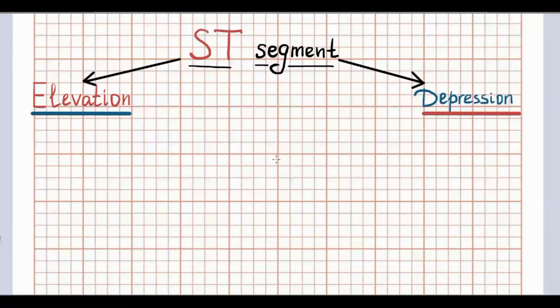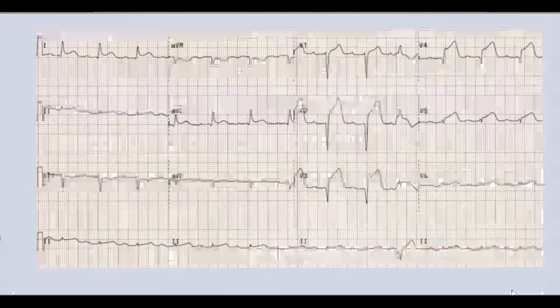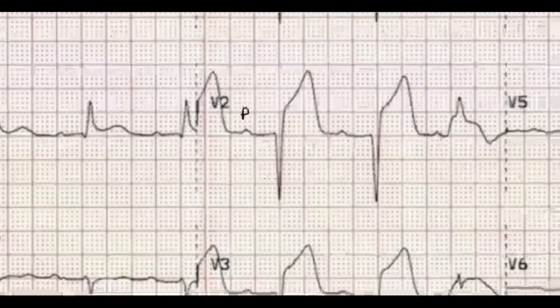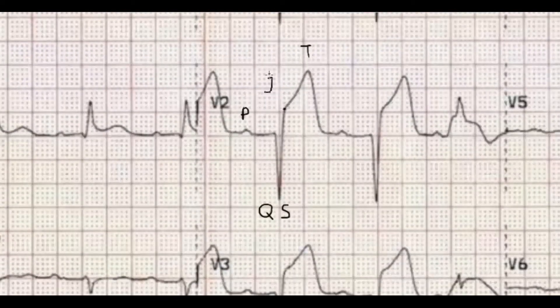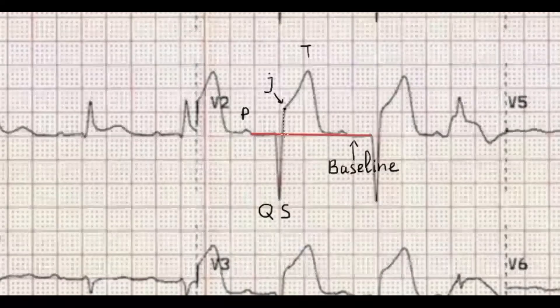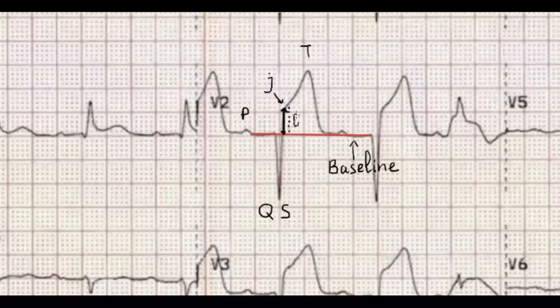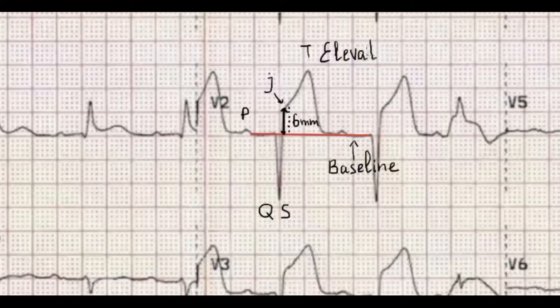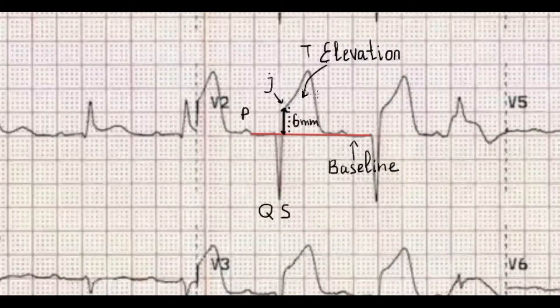There are two changes of ST segment. The first one is when ST segment is located above the baseline. It is called elevation. So elevation is distance between baseline and J point.